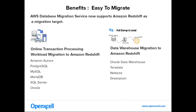Next, it is very easy to migrate. It provides a service called DMS — Database Migration Service — which supports Amazon Redshift as a migration target. It will help migrate data from existing sources to Amazon Redshift directly. Databases like Amazon Aurora, PostgreSQL, MySQL, MariaDB, Microsoft SQL Server and Oracle can be easily migrated to Amazon Redshift. It also supports data warehouse sources like Oracle Data Warehouse, Teradata, Netezza and Greenplum. You just need to export the dump file and import it directly to Amazon Redshift — that's how simple it is to convert a normal database to a petabyte-scale data warehouse.